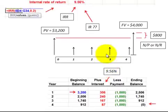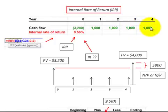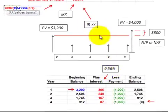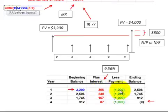We go and put it into the internal rate of return function, where we have minus $3,200 in year one and then four payments of $1,000 each. We come up with a 9.56% interest rate — that would be our unknown interest rate. Then we'd use that interest rate to amortize our interest expense or revenue. For example, we take the $3,200 balance, multiply by our interest rate to get interest expense, subtract our payment, and get an ending balance, continuing to amortize in that fashion.